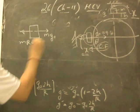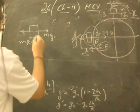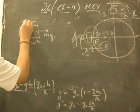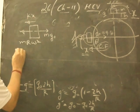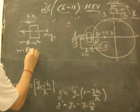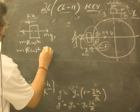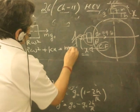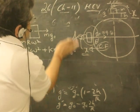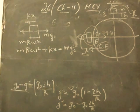And there is another force which is due to the extension of the spring: kx. So the equation becomes mRω² + kx = mg₀. This is the equation for the equator.